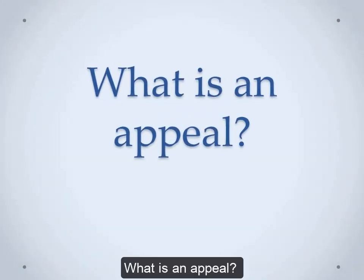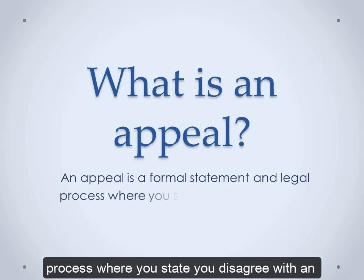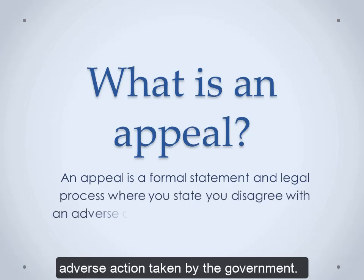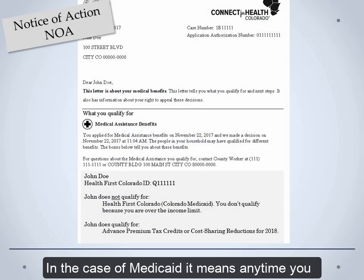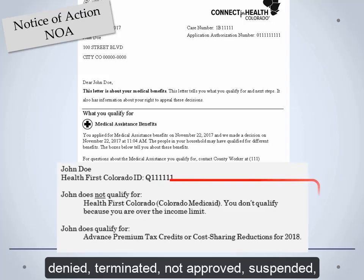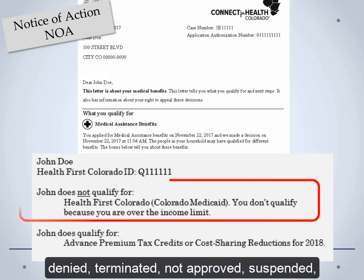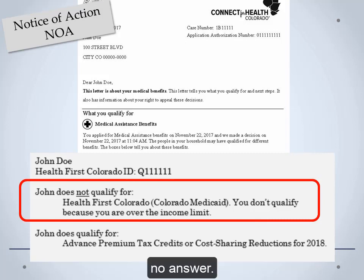What is an appeal? An appeal is a formal statement and legal process where you state you disagree with an adverse action taken by the government. In the case of Medicaid, it means any time you get a notice saying that your benefits are denied, terminated, not approved, suspended, reduced, or if you ask for something and get no answer.